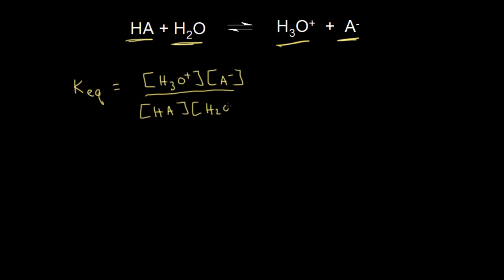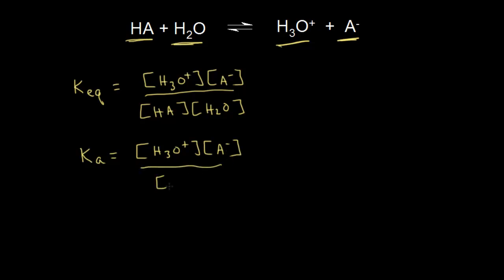Now the concentration of water is constant, so you could think about it as being removed from the Keq expression. Or you could think about combining the concentration of water with the Keq to give you what's called a Ka expression. A Ka expression would have the concentration of H3O+ times the concentration of A minus over the concentration of HA, since we've taken water out of the expression.